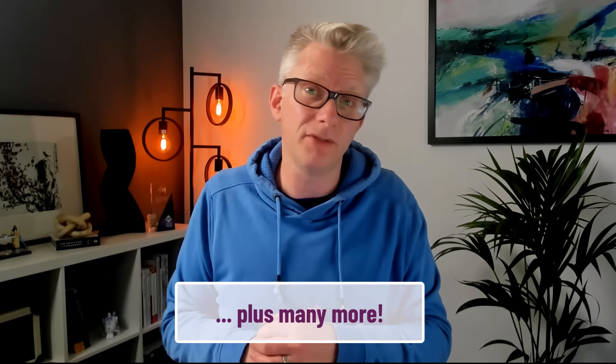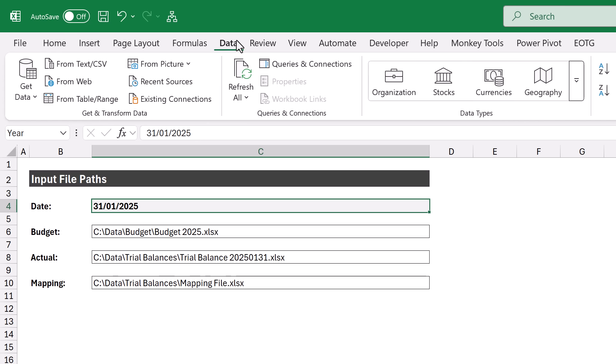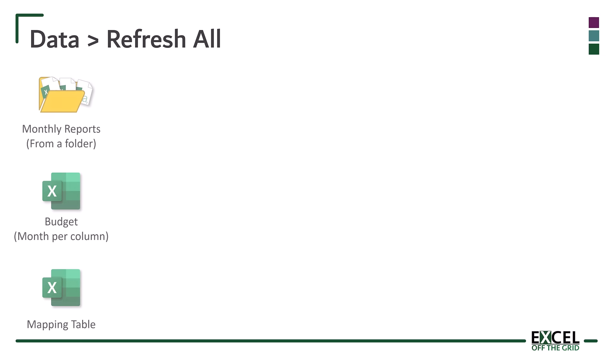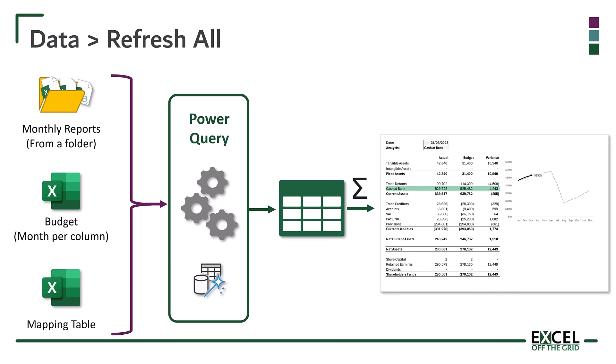If we can connect to a database, that's even better — we don't need to worry about those file paths. But if we are using files, we can work with Excel files, CSV files, we can use SharePoint, we can use PDFs, we can use lots of different file types. Once we have created our query, all we need to do is in Excel click Data, Refresh All. This will go and get the latest inputs, reshape the data into the perfect data layout, and then load it as a table or a pivot table so that our calculations can update automatically based on that data.